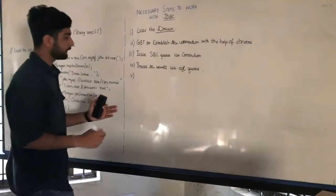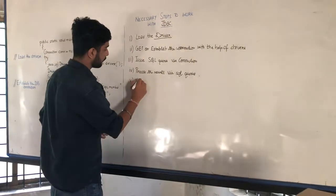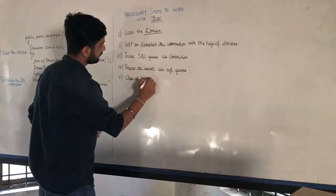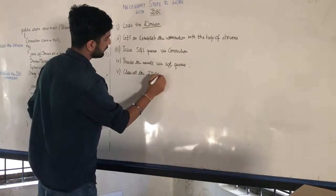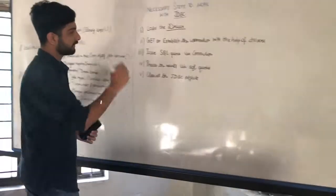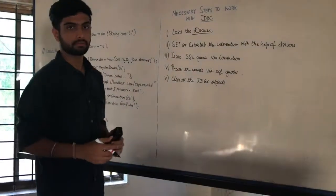After processing the results via SQL queries, we move to close all the JDBC objects. These were the 5 crucial steps that we work with JDBC.